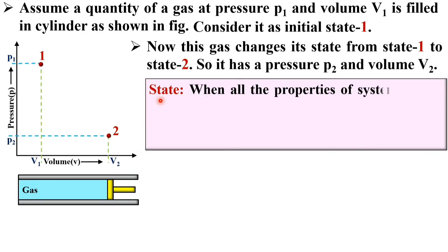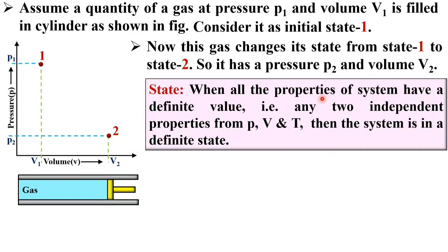Now, you can define the state when all the properties of a system have a definite value. That means any two independent properties from the pressure, volume and temperature. Then, the system is in a definite state.